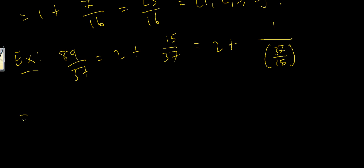I know that 37 over 15 is 2 remainder 7, because 2 times 15 is 30, and I've got 7 left over. So this becomes 2 plus 1 over 2 plus 7 fifteenths. And now I use exactly the same trick that I did before.